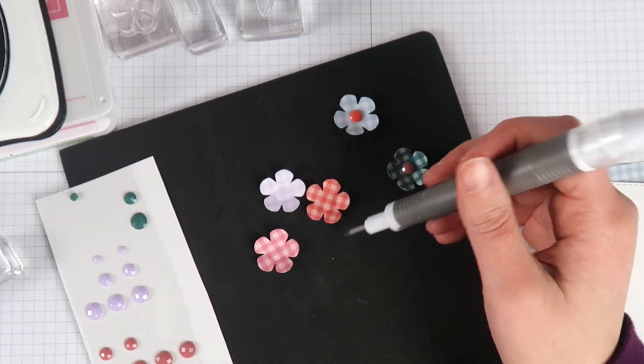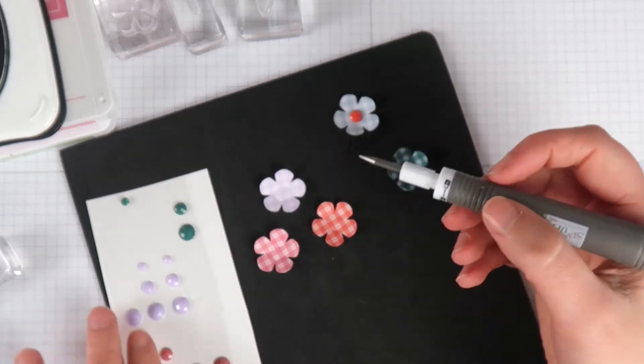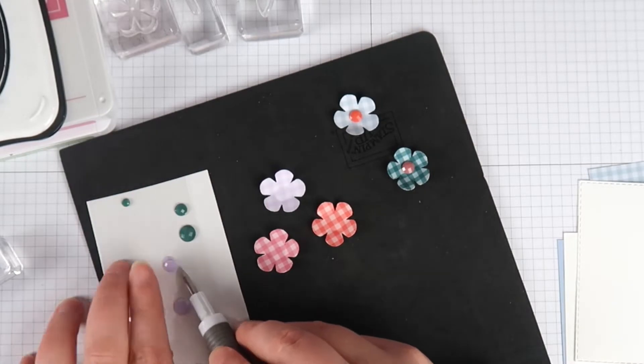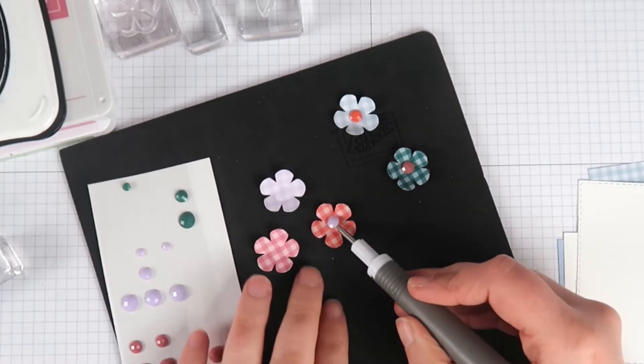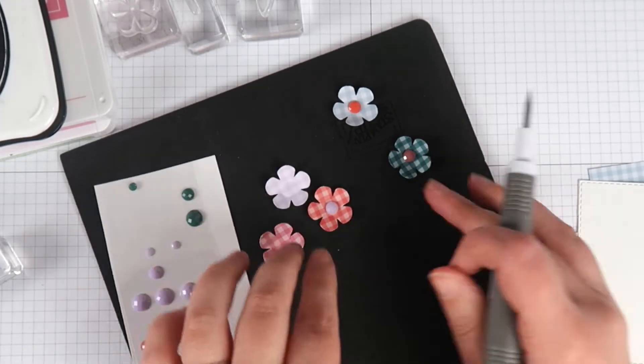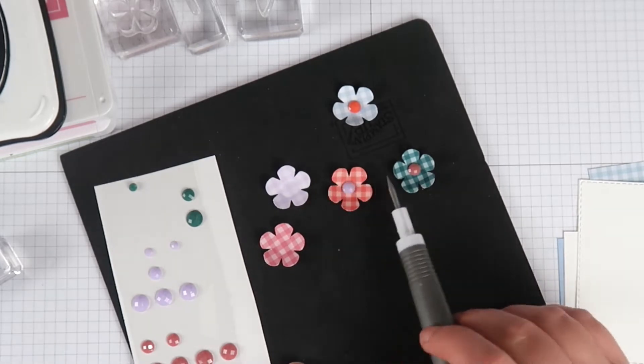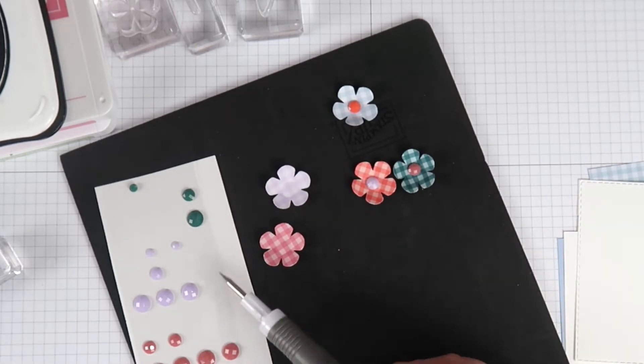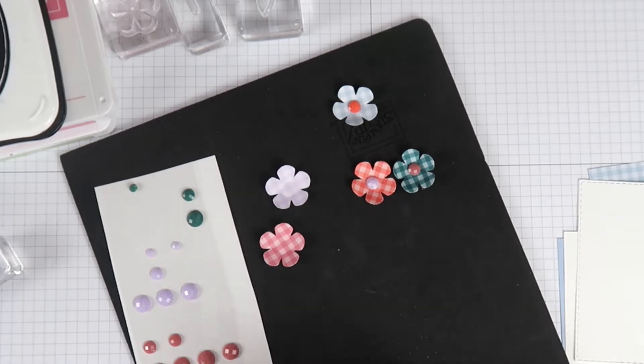Where I have that flat part still in the center, I'm gonna take these enamel dots and put them in. This is an enamel dot pack from Stampin' Up that's also the current In Colors, so they coordinate with my patterned paper that I have here. I'm just going to be really careful to make sure that I don't end up with one flower that has the same color paper and dot in the middle.